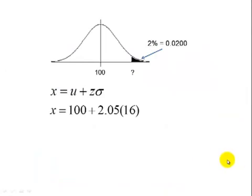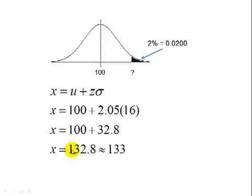Going back to the problem, mu is 100, z is 2.05, our standard deviation is 16. Multiplying these two together gives us 32.8. Add it to 100, and the score is 132.8. Since IQ scores are discrete numbers, we round this to 133. So in order to join MENSA, your IQ score would have to be 133 or more.